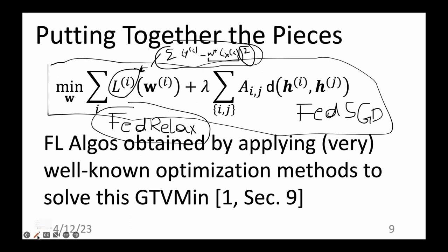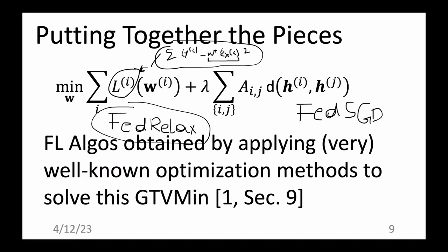Does anyone know another design choice for the loss function for linear hypothesis maps? If we stick with linear models at node I, could we use a loss function different from the squared error? What comes to mind? Other design choices — regularization.